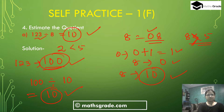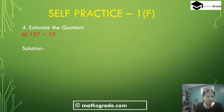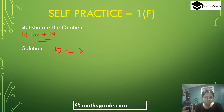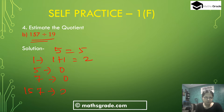Question number 4b: 157 divided by 19. First we round 157 to the nearest 100. The tens place digit is 5, and 5 is equal to 5, so add 1 to the hundreds digit. The hundreds digit 1 changes to 2, the tens digit 5 changes to 0, and units digit 7 changes to 0. So 157 rounded to the nearest 100 is 200.